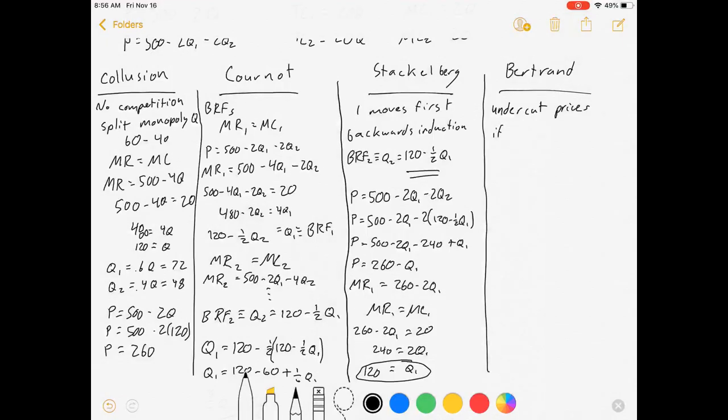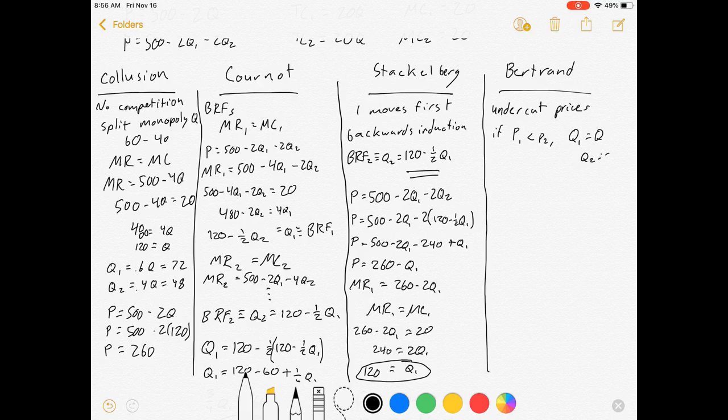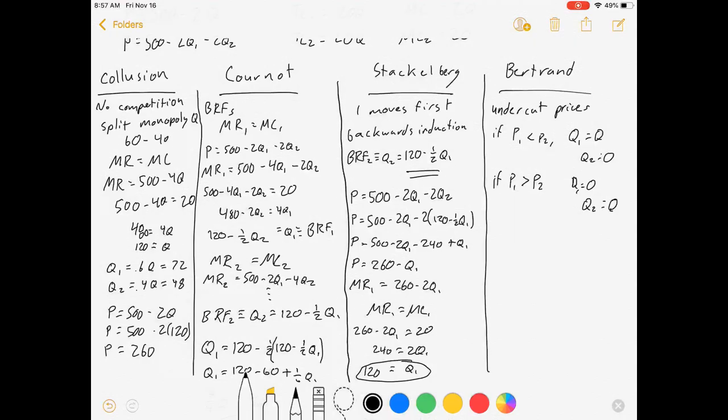Because if price one is less than price two, then Q1 equals Q and Q2 equals zero. If price one is greater than price two, Q1 equals zero and Q2 equals big Q. So whichever firm gets the lower price takes the whole market. And if price one equals price two, Q1 equals Q2 equals big Q over two.